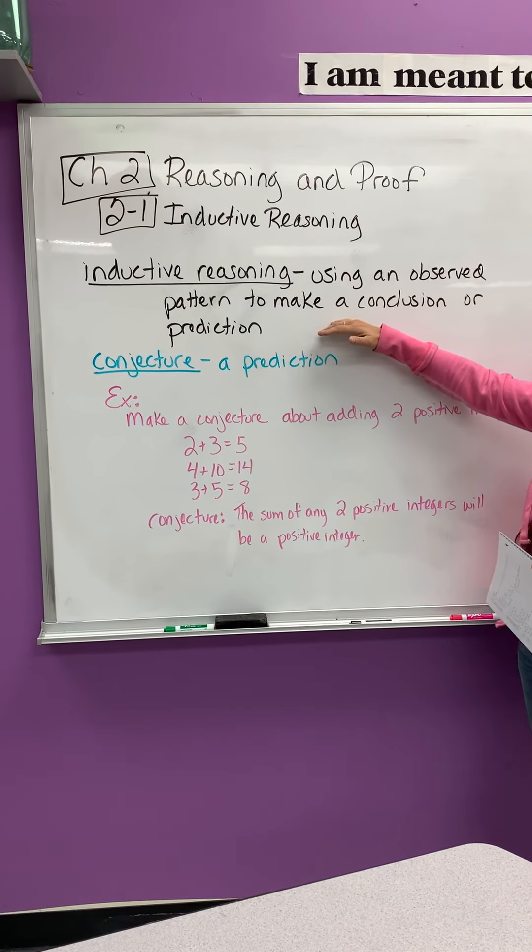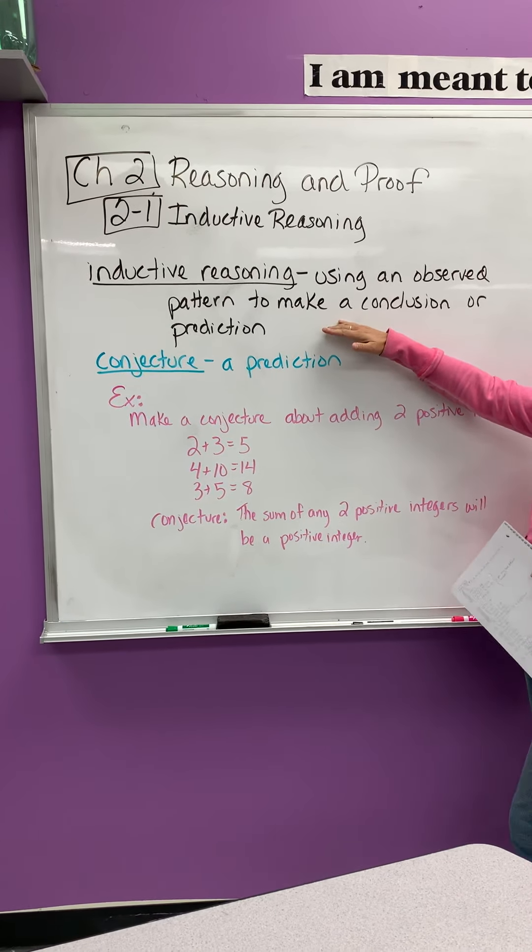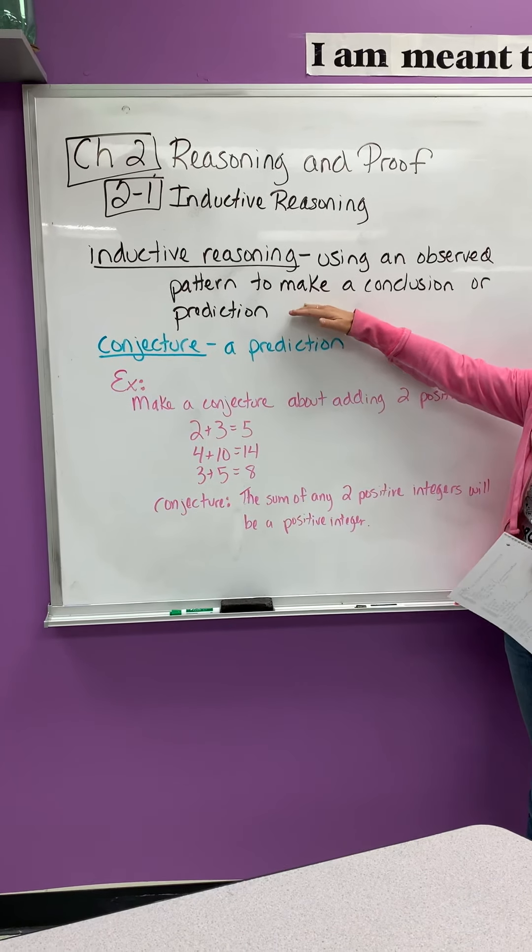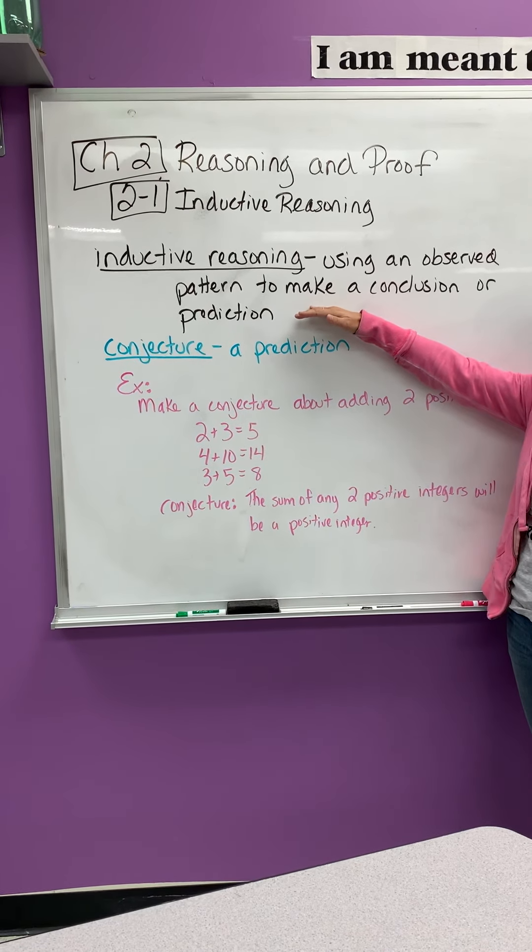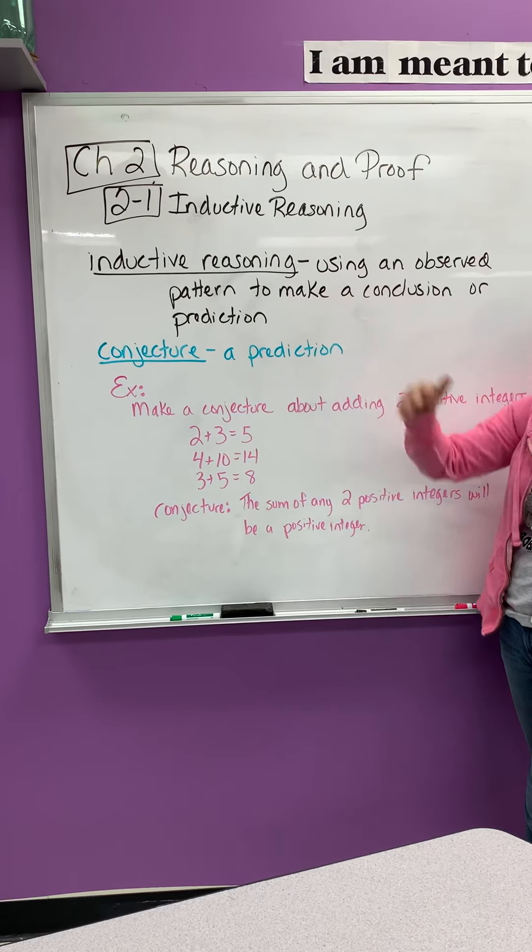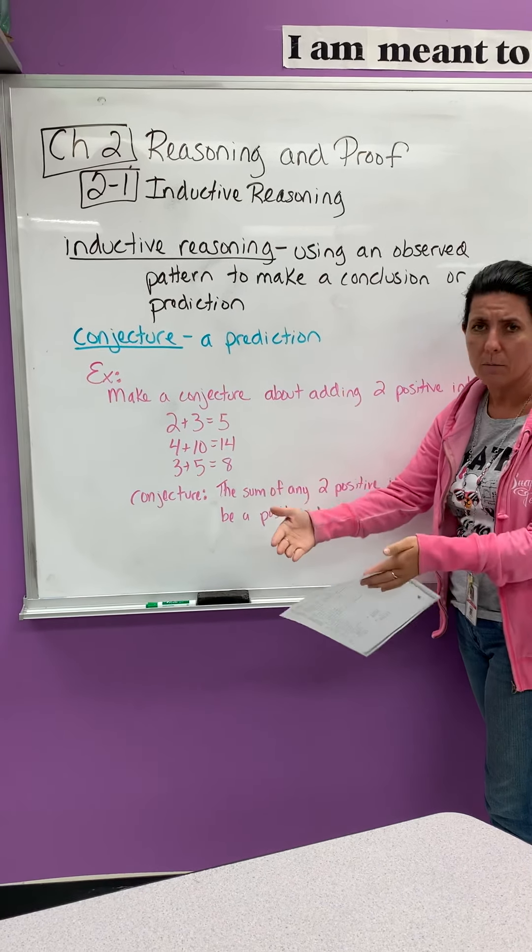So inductive reasoning is using an observed pattern to make a conclusion or prediction. The most common one is counting, skip counting, like 2, 4, 6, 8. You're using what the numbers are given to you to predict the next number.